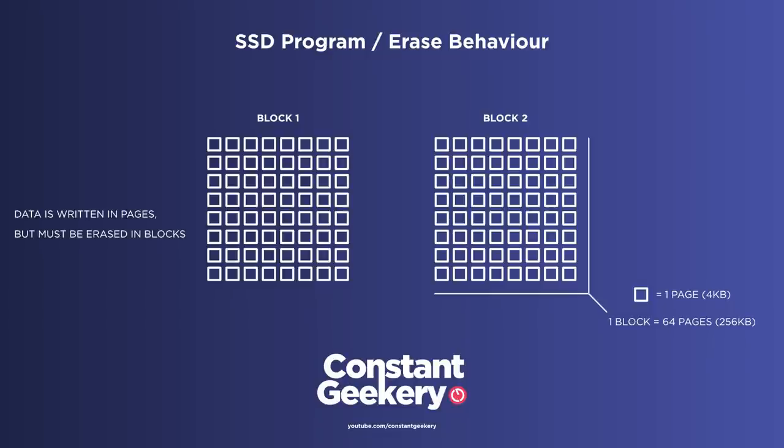A diagram might be helpful. Here we've got two blocks each with 64 pages. Now let's suppose that we've got a file that uses 16 pages in the first block. Then we write another file, which takes up another 32 pages. And now we want to edit that original file.